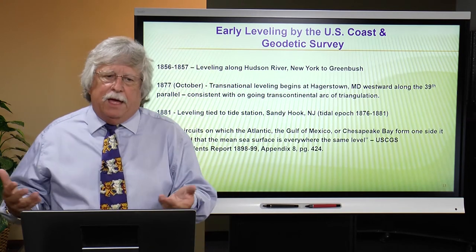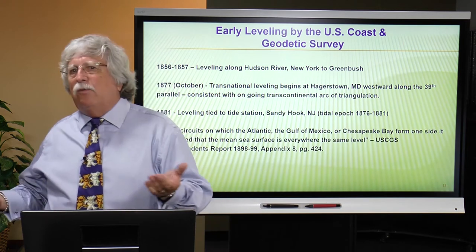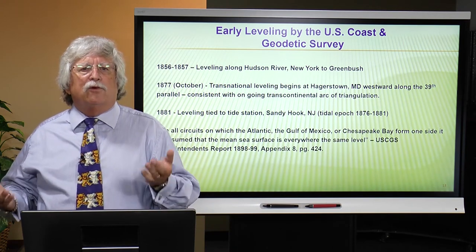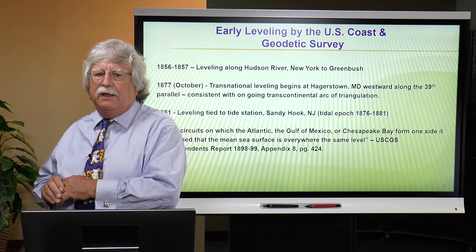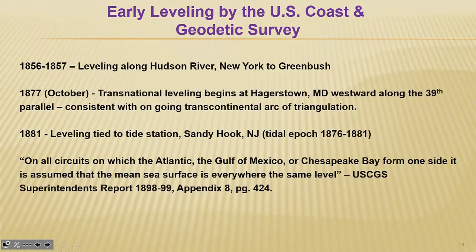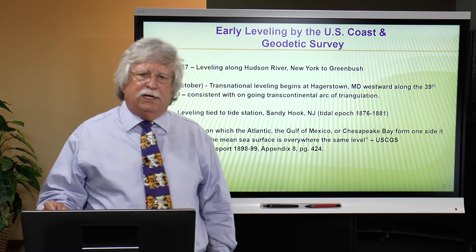We're dealing with a fairly short timeframe for tidal observations — these were fairly new in the development of our reference frame. Back then, the concept was that everywhere sea level is the same level surface. Today we know that is not true — as the Coast and Geodetic Survey Superintendent's Report of 1898-99 states, they accepted that mean sea level is the same everywhere. Today we know that is exactly not the case — mean sea level appears to be about one meter higher on the West Coast than on the East Coast.